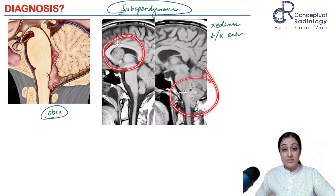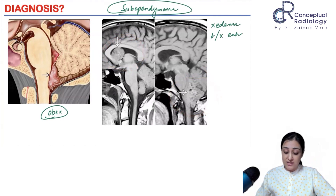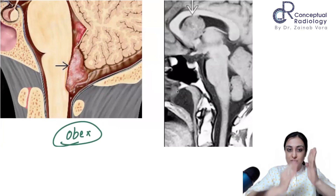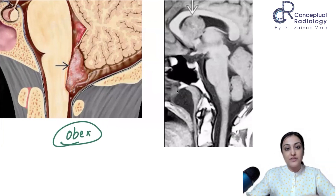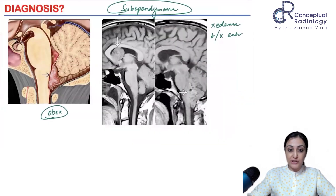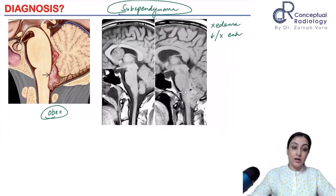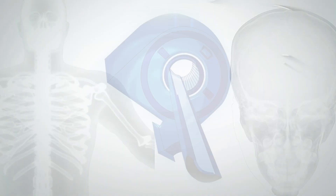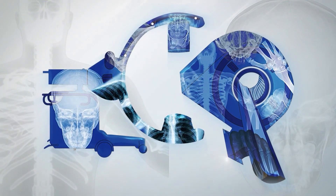This unique case shows a subependymoma in two classic locations: one at the obex — the lowest point of the fourth ventricle, below which is the central canal — and another anteriorly in the lateral ventricle. This illustrates both classic locations described for subependymoma.